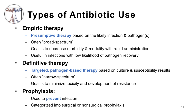Definitive therapy, in contrast, is targeted pathogen-based therapy based on culture and susceptibility results or other diagnostic testing. Definitive therapy is often narrow spectrum, and the goal is to minimize toxicity and development of resistance using the narrowest spectrum possible. For every infection encountered in the clinic, the goal should be to use the narrowest spectrum of therapy once pathogens are known or grow in culture, which can be several days after the start of empiric therapy.